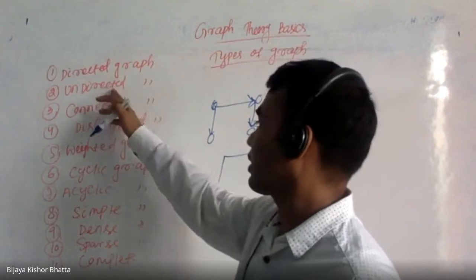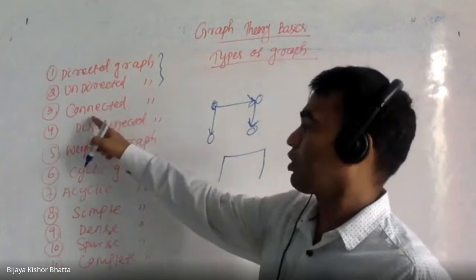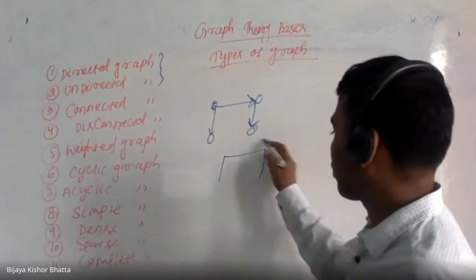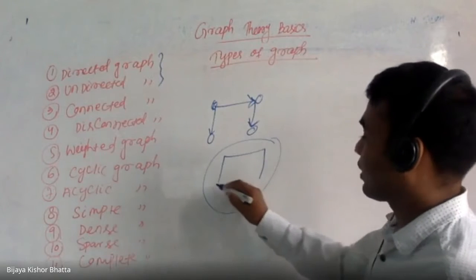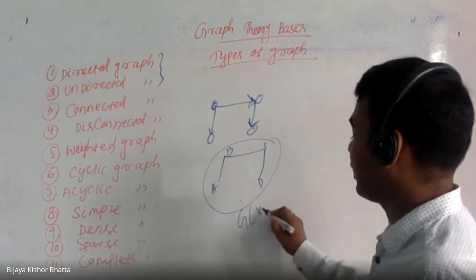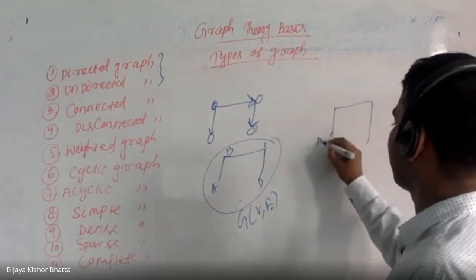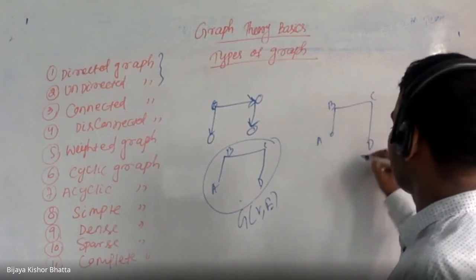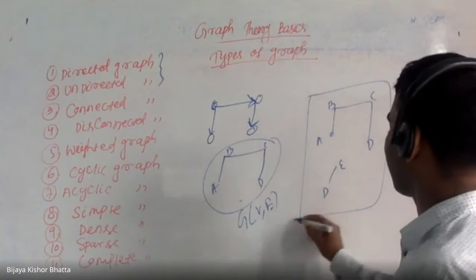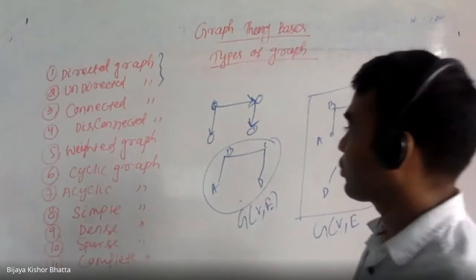An undirected graph simply means there is no direction associated with that particular graph. Then, coming to the third type — connected graph. A connected graph means, if you take vertices A, B, C, D, E, this is graph G(V, E). This is connected. But suppose another graph has components like A-B-C-D and separately D-E — held together as G(V, E) — then it is a disconnected graph.